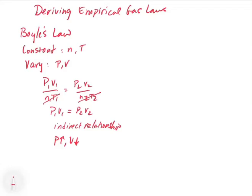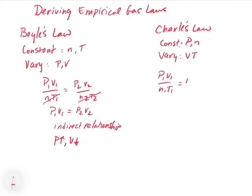We can also look at Charles' law. In Charles' law, you look at the relationship between volume and temperature. What's varied here is the volume and the temperature, and what's held constant is the pressure and the number of moles. We can derive an equation where we have P1V1 over N1T1 is equal to P2V2 over N2T2. We're going to hold the number of moles constant, so that drops out. We're going to hold the pressure constant, so that drops out. We're left with V1 over T1 is equal to V2 over T2.